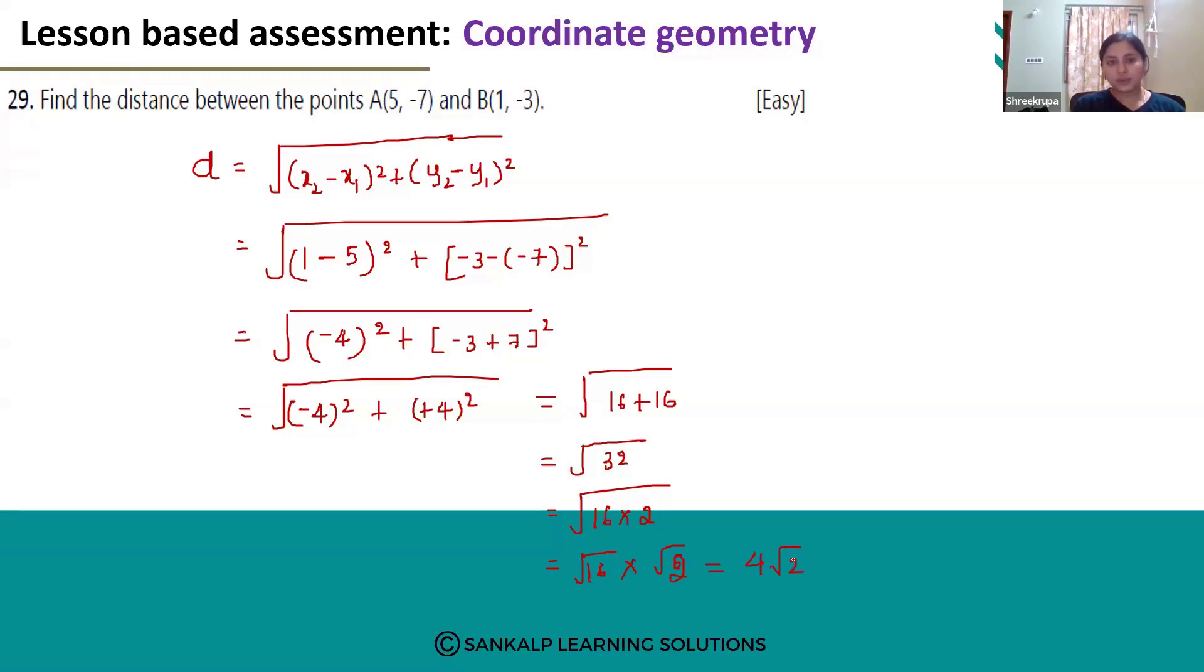√16 is 4 and √2 is √2. So it's 4√2 units.